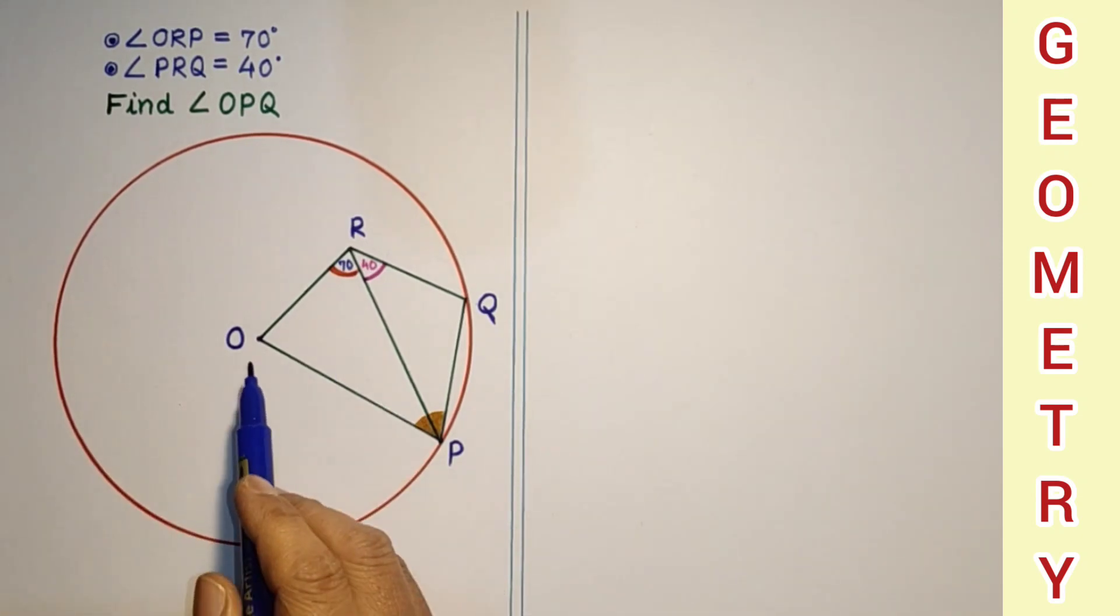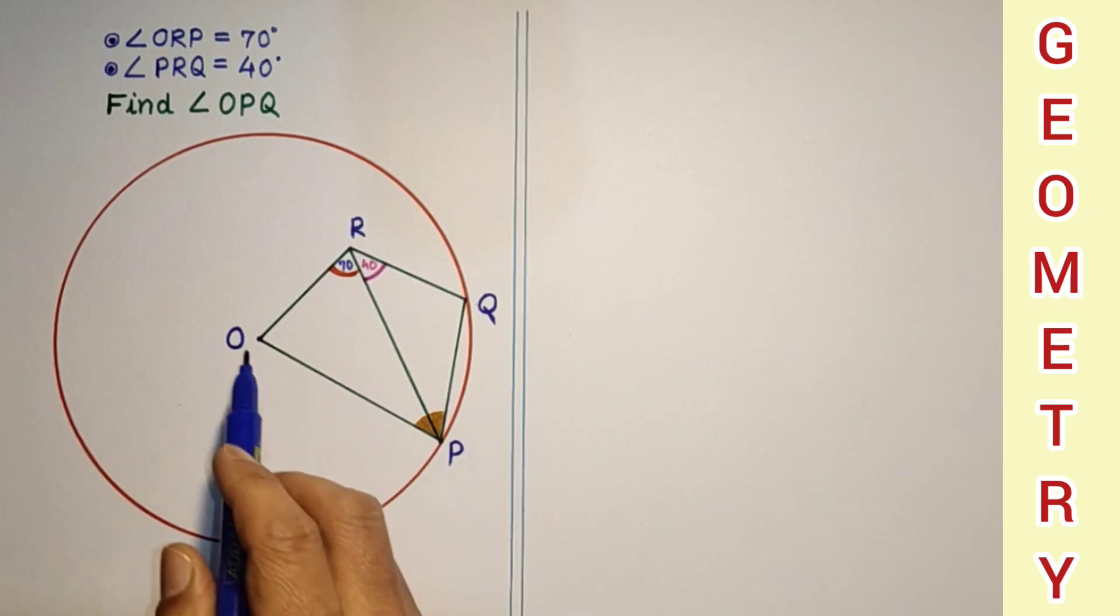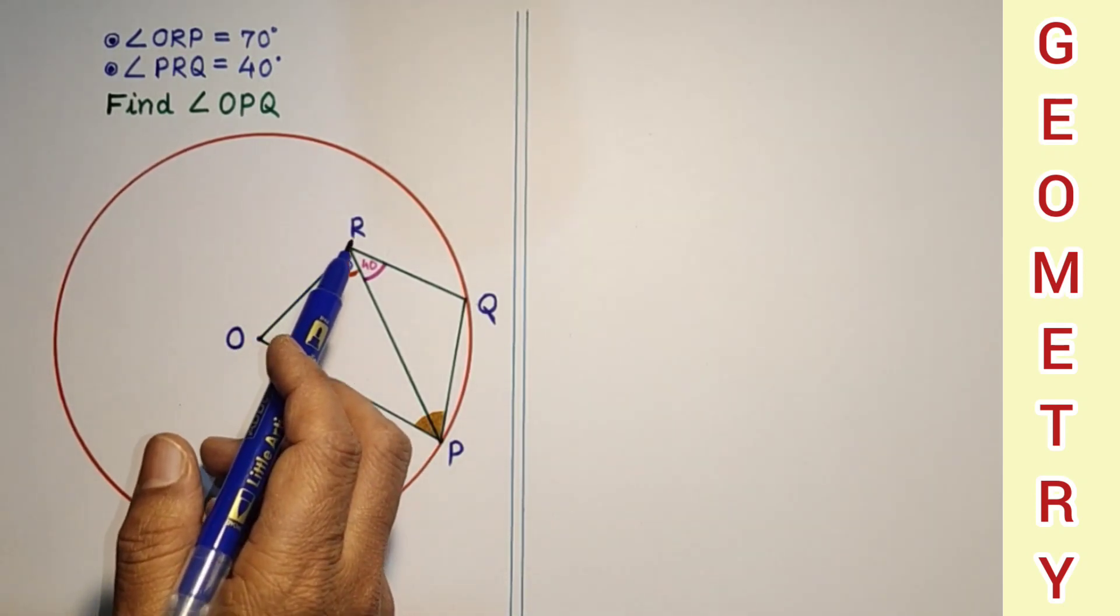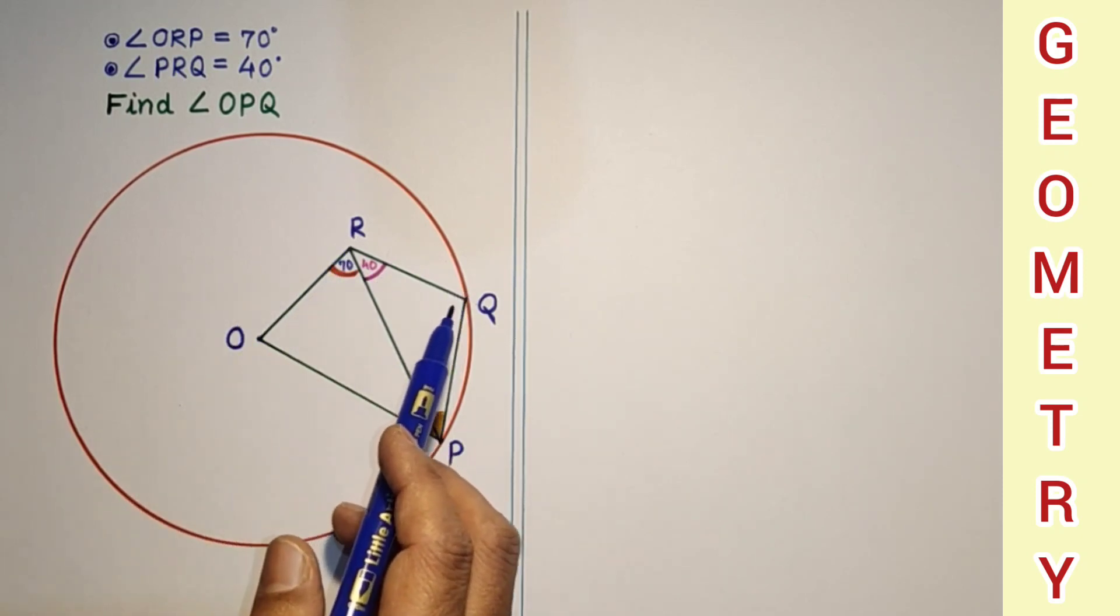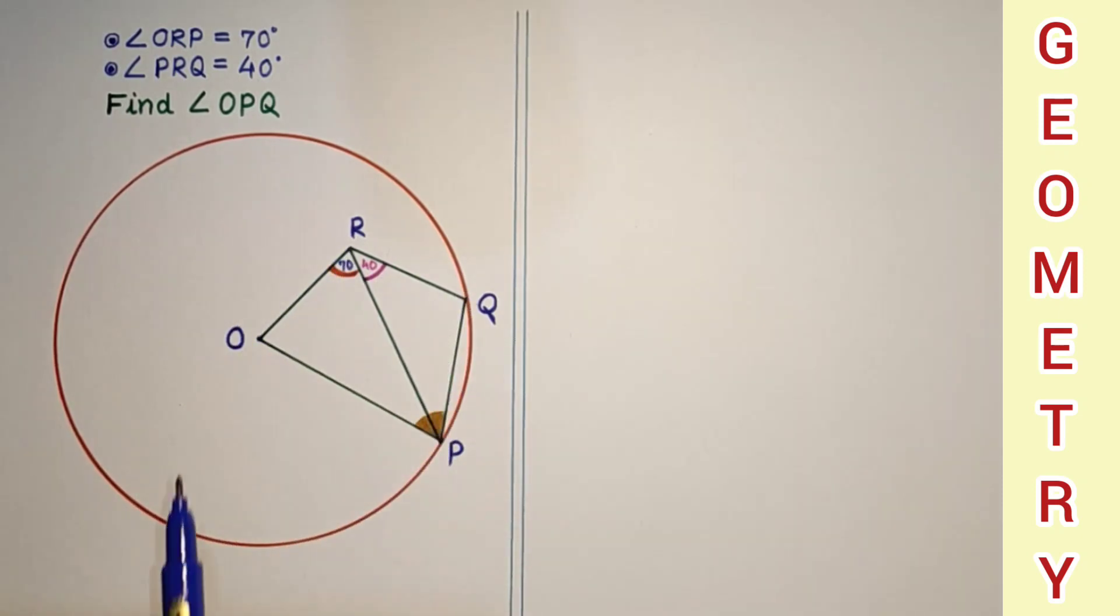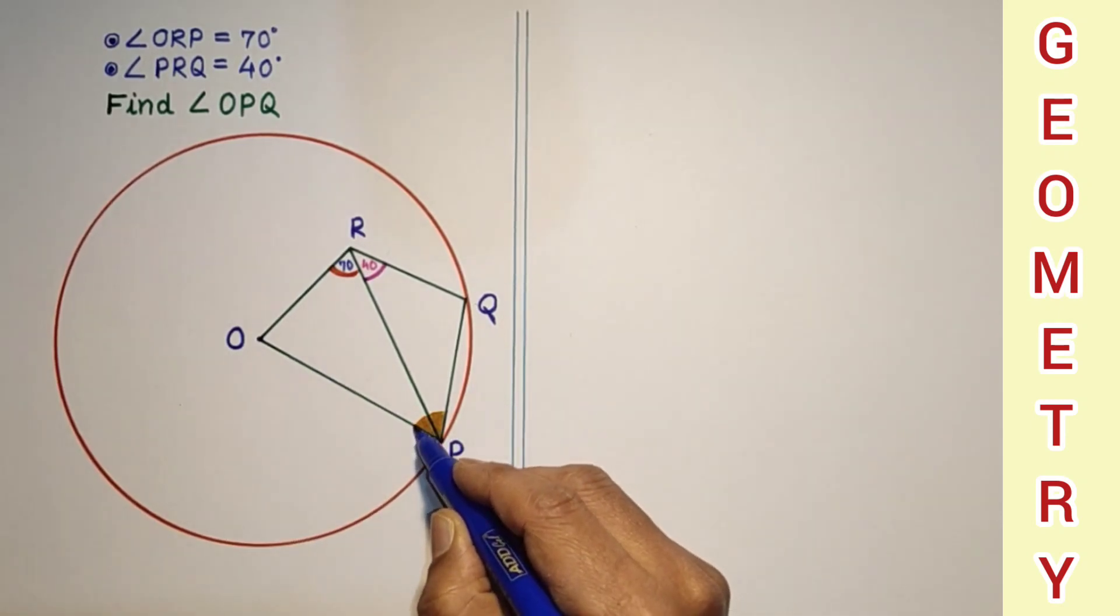In the question, O is the center of the circle. P is any point on the circumference, OP joined which is radius. R is a point inside the circle, OR is joined, and from that point R, RQ is joined where Q is on the circumference. Angle ORP is given as 70 degrees while angle QRP is 40 degrees, and we have to find this angle's value, angle OPQ.